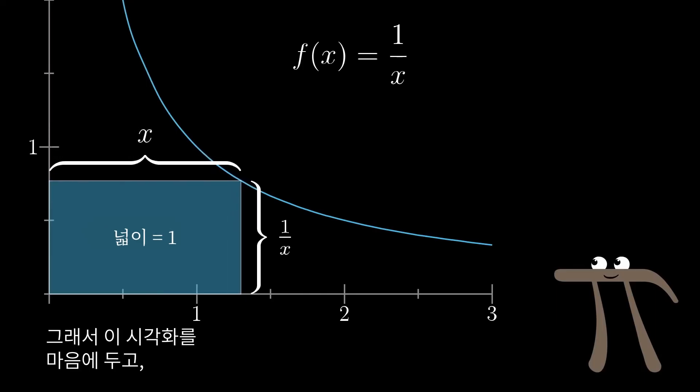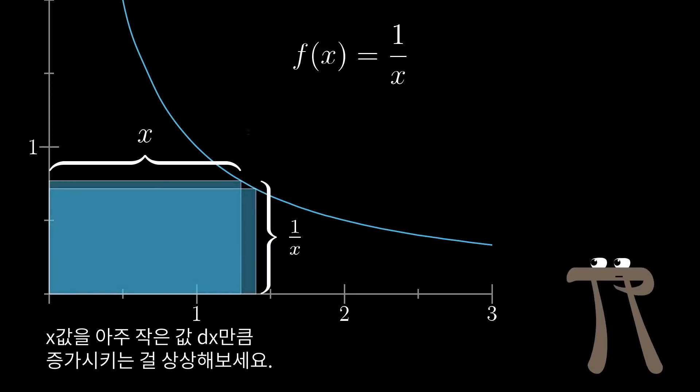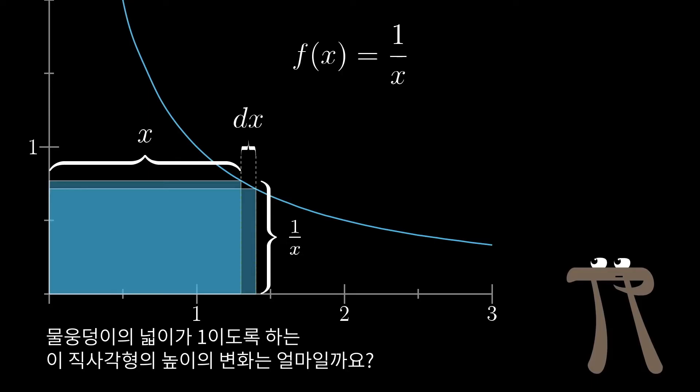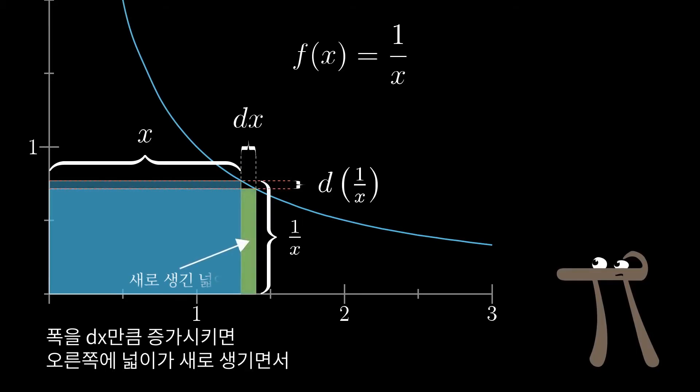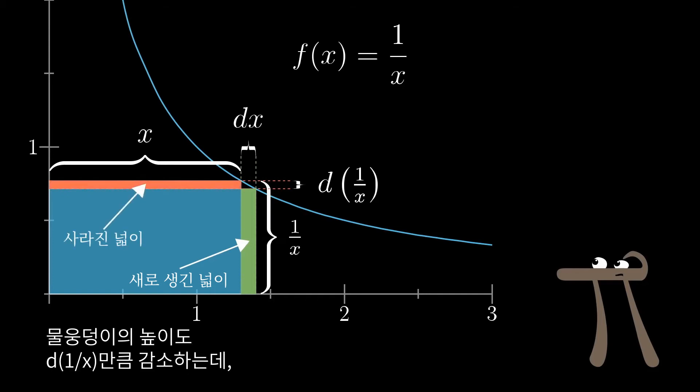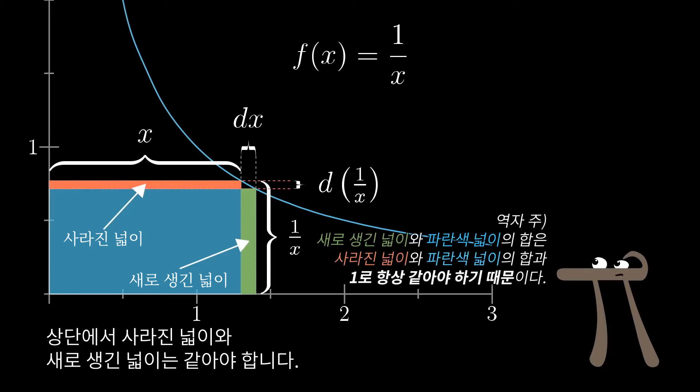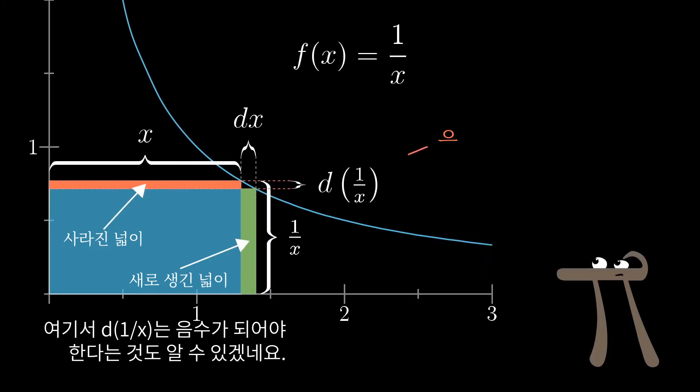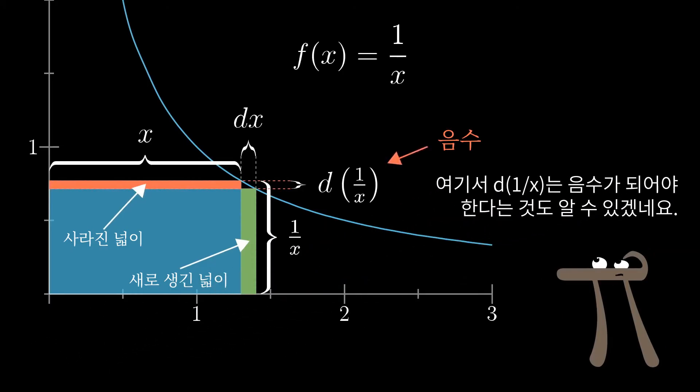So, with this visual in mind, for the derivative, imagine nudging up that value of x by some tiny amount, some tiny dx. How must the height of this rectangle change, so that the area of the puddle remains constant at 1? That is, increasing the width by dx adds some new area to the right here, so the puddle has to decrease in height by some d(1 over x), so that the area lost off of that top cancels out the area gained. You should think of that d(1 over x) as being a negative amount, by the way, since it's decreasing the height of the rectangle.